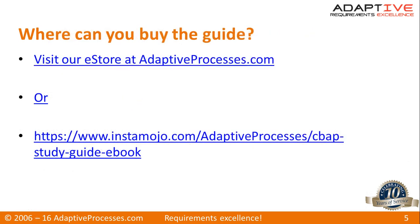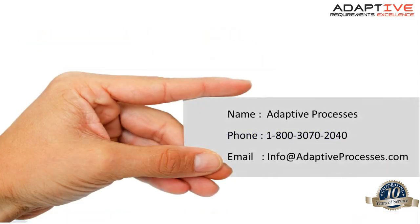The book is available on our e-store at adaptiveprocesses.com/e-store, or you can go to the Instamojo site as given in the presentation and buy it from there. For any questions and clarifications, feel free to write to us at info@adaptiveprocesses.com. If you are in India, you can also call toll-free 1-800-3070-2040. Thank you.